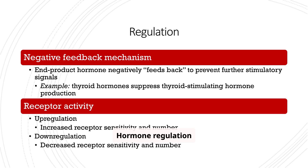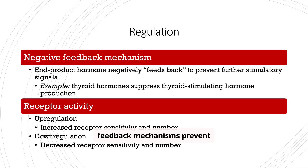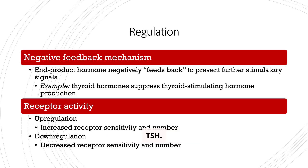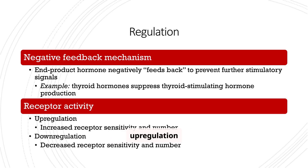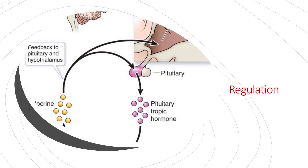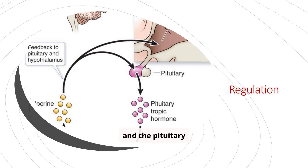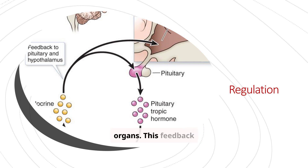Hormone regulation is vital for maintaining homeostasis. Negative feedback mechanisms prevent overproduction of hormones, like thyroid hormones suppressing TSH. Receptor activity also plays a role, with up-regulation increasing sensitivity and down-regulation decreasing it. This diagram illustrates the intricate relationship between the hypothalamus and the pituitary gland, and the feedback loop that ensures precise hormonal control.